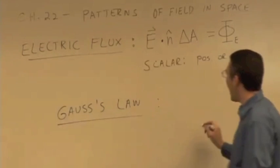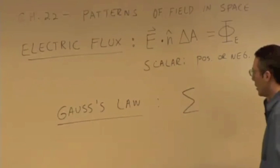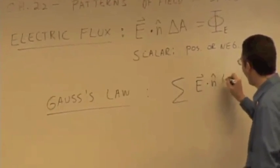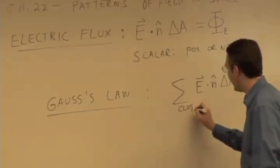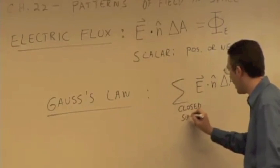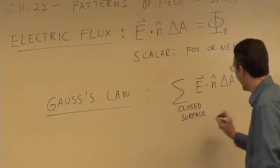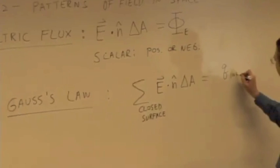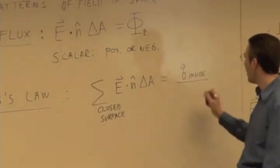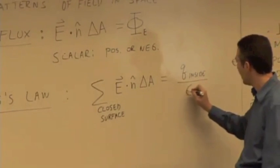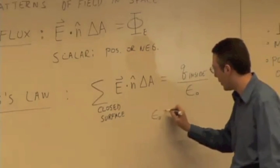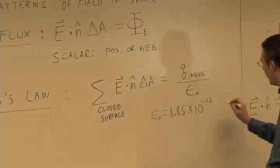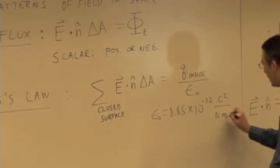Gauss' Law says that the sum of the electric flux, the sum of E dot N hat delta A, over a closed surface, like a box that we've just been showing, is equal to the charge inside divided by a constant. And that constant turns out to be epsilon zero. And remember, epsilon zero is 8.85 times 10 to the minus 12 Coulomb squared per Newton meter squared.